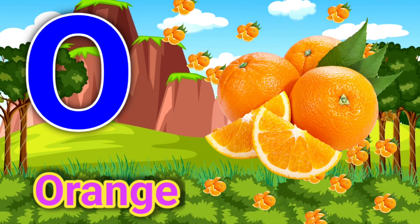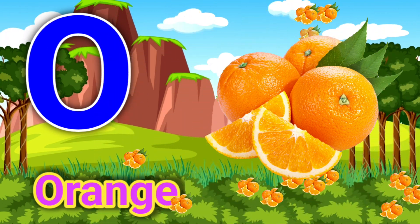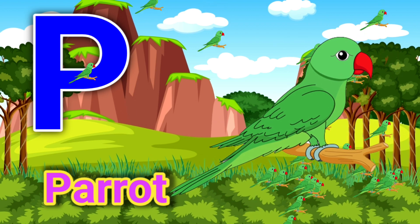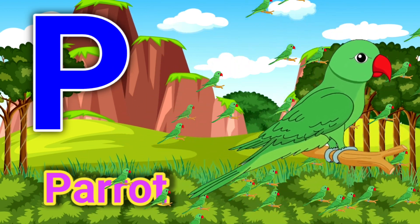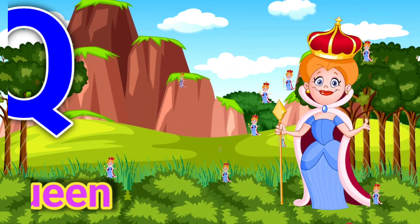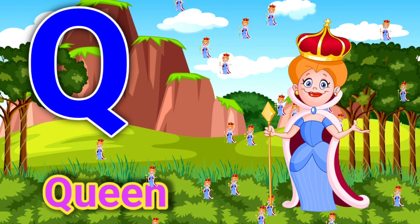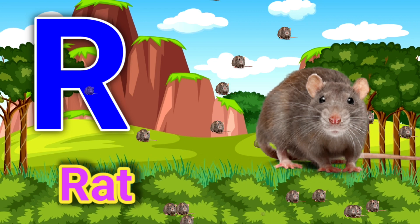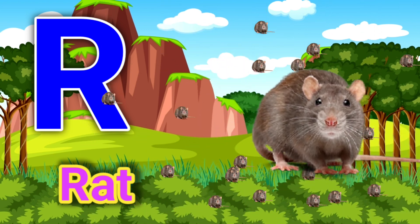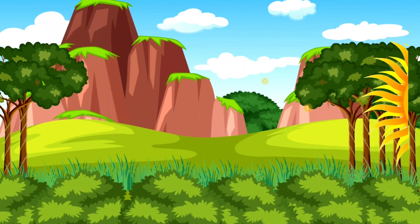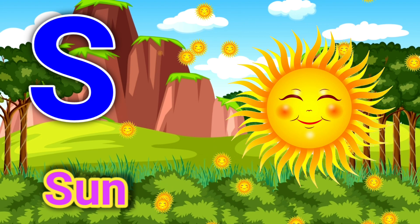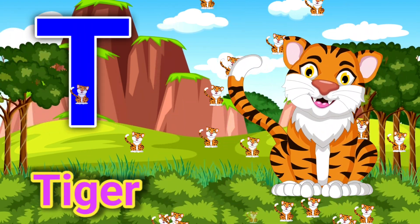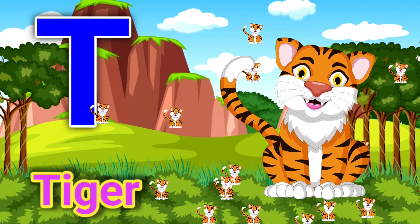O for orange, P for parrot, Q for queen, R for red, S for sun, T for tiger.